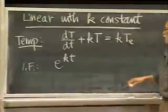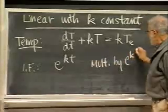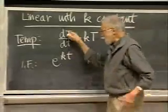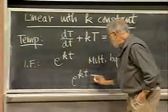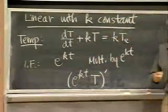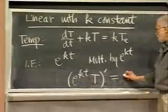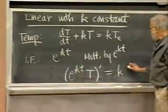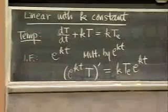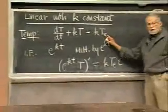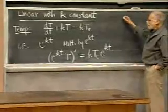The resulting equation in compact form is: d/dt[e^(kt)·T] = k·T_e(t)·e^(kt). Now finally we integrate. The answer is: e^(kt)·T equals the integral of k·T_e(t)·e^(kt) dt plus a constant c. Therefore T equals e^(-kt) times the integral of k·T_e(t)·e^(kt) dt plus c·e^(-kt). The difficulty of doing this integral depends entirely upon how the external temperature T_e varies with time.